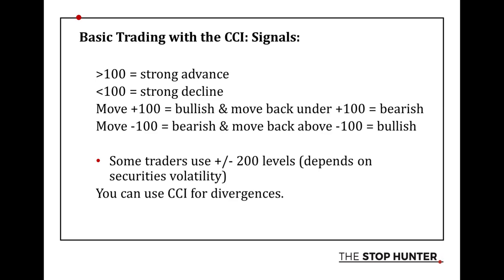Some basic trading rules using the CCI: greater than 100 means a strong advance in price; less than minus 100 equals a strong decline. A move greater than 100 is bullish, and a move back under that plus 100 is bearish — and vice versa for minus 100. Outside of those bands is a significant point in the price action. Some traders also use plus and minus 200 levels, which I do blend into my approach.